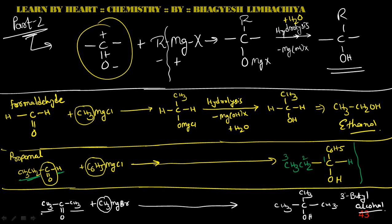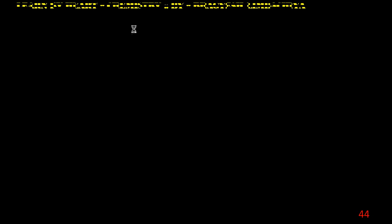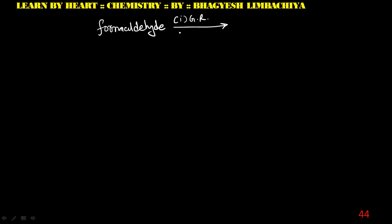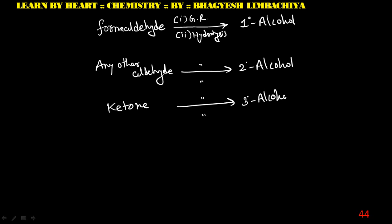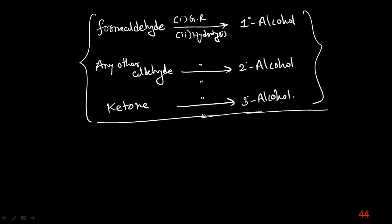Remember this summary: when formaldehyde reacts with a Grignard reagent followed by hydrolysis, we always get a primary alcohol. When any other aldehyde undergoes the same reaction, we get a secondary alcohol. When a ketone undergoes the same reaction, we get a tertiary alcohol. This is the summary of the mechanism — remember this.